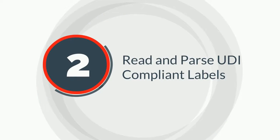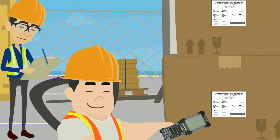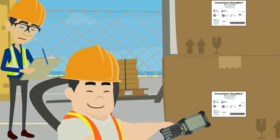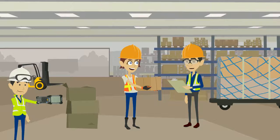Number two is the ability to read and parse UDI compliant labels. Your inventory system should be able to receive inbound products that are UDI compliant by utilizing the UDI product label upon receiving and record various pieces of data contained in the label automatically. This ability not only saves time during the receiving process but ensures that you've captured this important data in an error-free manner and can use it in the subsequent steps and processes within your shop.